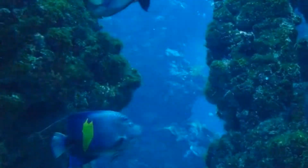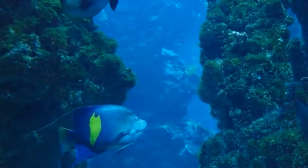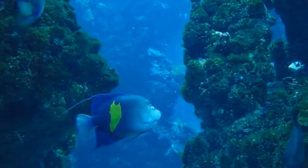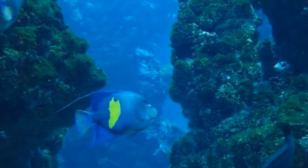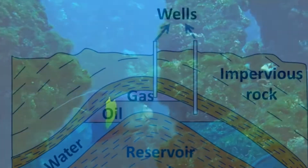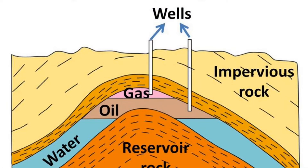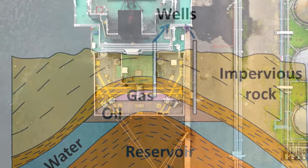Formation of Petroleum. When sea animals and plants died, their remains settled at the bottom of the sea where they got compressed by layers of sand and clay. High temperature and pressure converted these remains into petroleum.